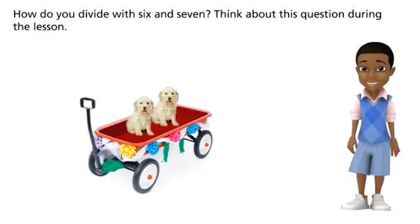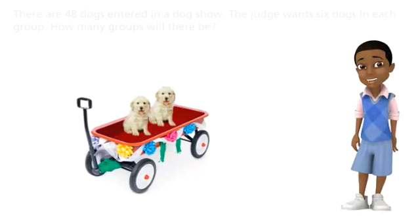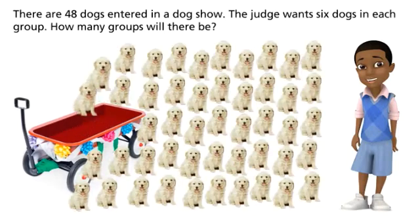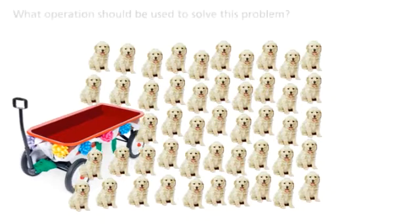How do you divide with six and seven? Think about this question during the lesson. There are 48 dogs entered in a dog show. The judge wants six dogs in each group. How many groups will there be? What operation should be used to solve this problem?